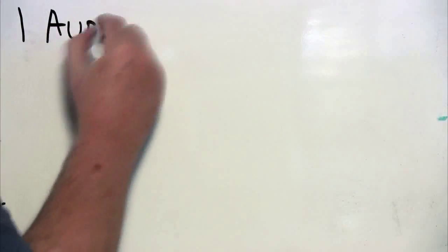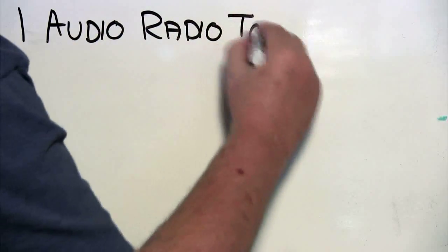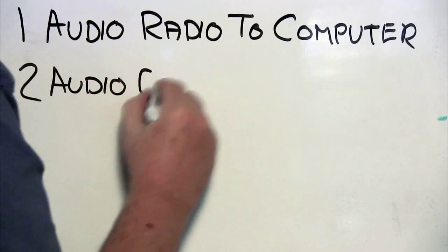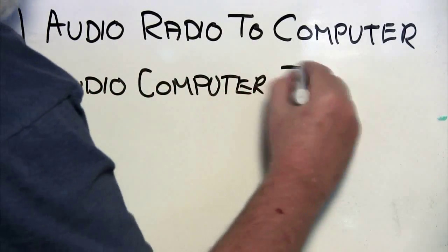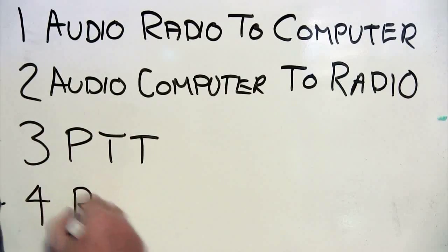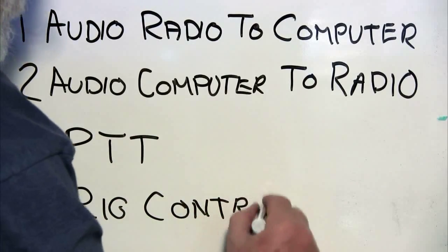Four things to think about. Number one is the audio from the radio to the computer. Number two is audio from the computer to the radio. Number three is push to talk, how you will place the transmitter and transmit. Number four is rig control. So it's nice and it's optional.